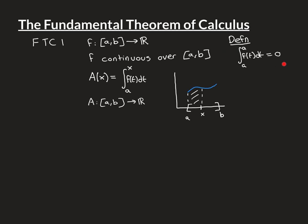We define the integral from A to A of any function f(t) dt to be zero. This is the first occasion where it has become necessary to define this. It's a definition made purely to keep the notation clean: without it, we'd have to define the area function A(x) piecewise — zero when X equals A, and the integral otherwise. By defining this, we avoid that and keep A(x) expressed in a single uniform formula. It's a perfectly intuitive definition since there is no area.